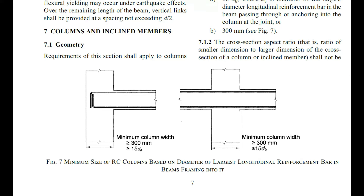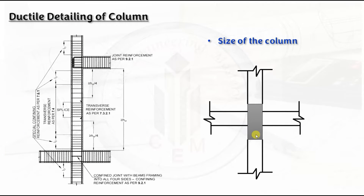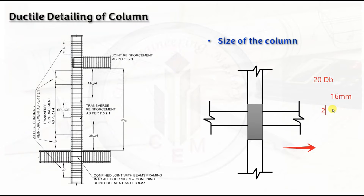Next is the cross-section aspect ratio, which is the ratio of the smaller dimension to the larger dimension. The aspect ratio shall not be less than 0.45. Vertical members whose aspect ratio is less than 0.4 shall be designed per clause 9. For example, in the x-direction, if the largest bar diameter in the passing beam is 16 mm, then 20 × 16 = 320 mm. So the minimum column dimension is 320 mm, which is greater than 300 mm.